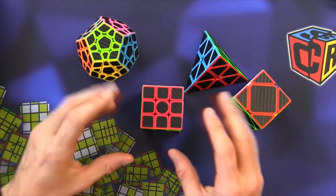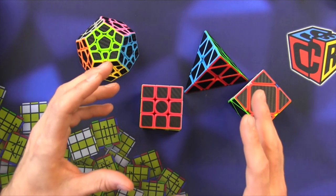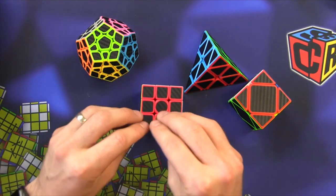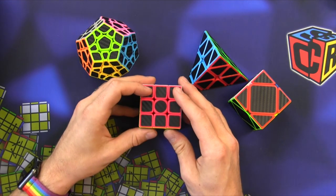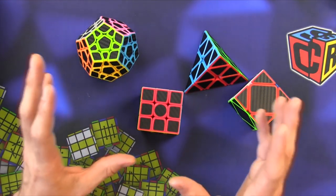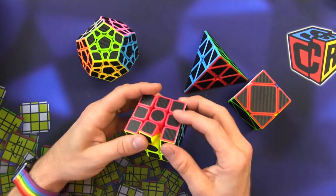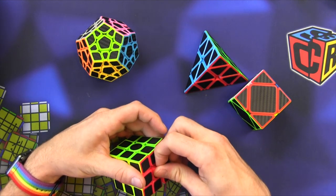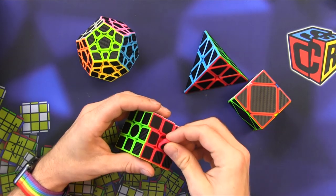There's one company that's the biggest culprit of this, and that's Z Cube. When Z Cube makes carbon fiber cubes, all they're doing is taking usually another company's puzzle - so this is the QiYi Warrior W - and putting some stickers on.